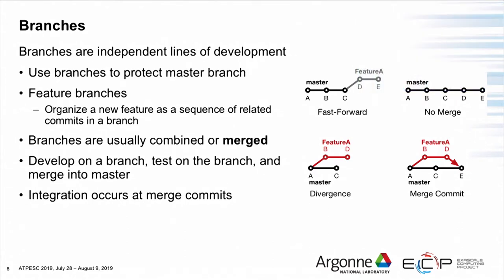We're going to add the next layer: branches. For our purposes, branches are just independent lines of development. We're going to use these branches to isolate the master branch from some of the dirtier work we're doing, concentrating on things called feature branches. The idea is you have some bit of work to do on the software that will come through a series of related commits. Instead of putting those on master, you put them aside on this feature branch. Once you've finished that development and think the feature is good, you merge those commits from the feature branch into the master branch — that's where the integration happens.